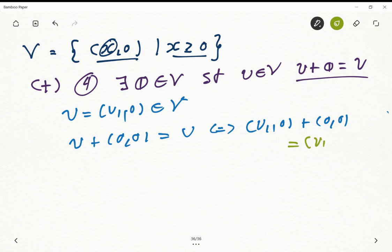This is equal to (u1, 0), so it's the same vector. So the neutral element is equal to the 0 vector. So this is important.